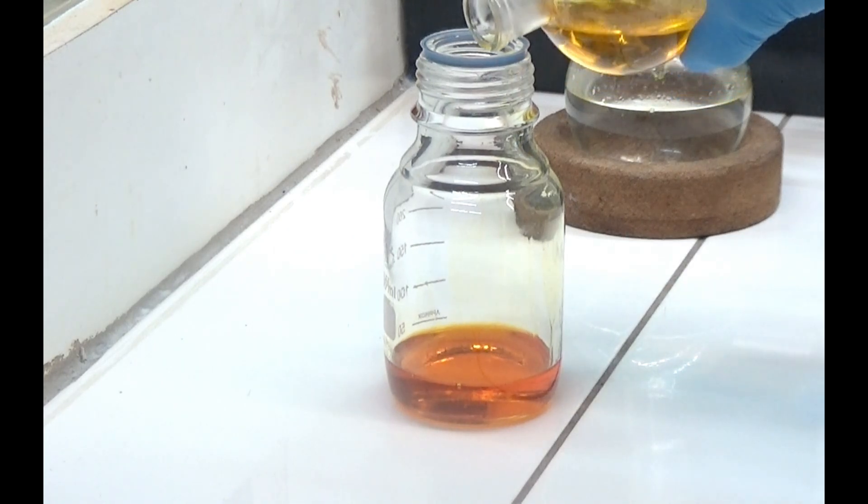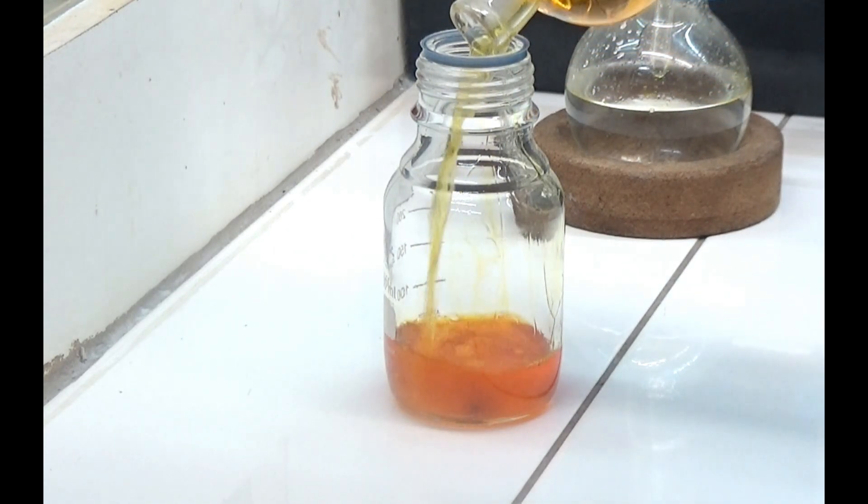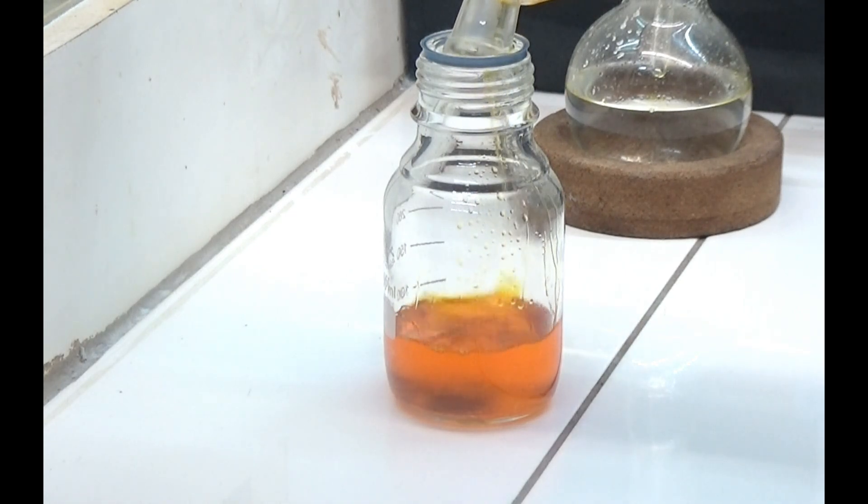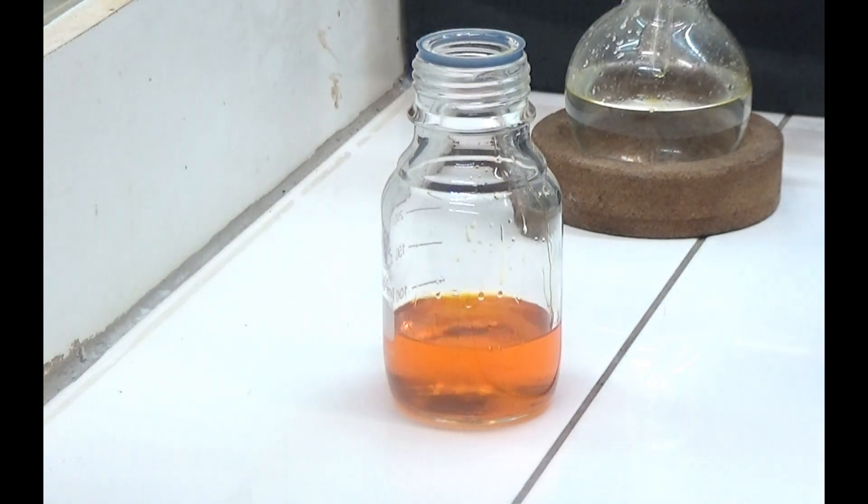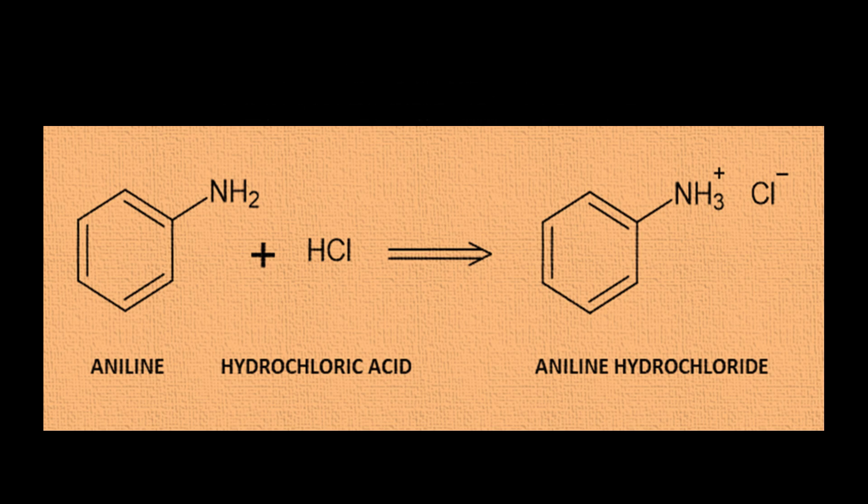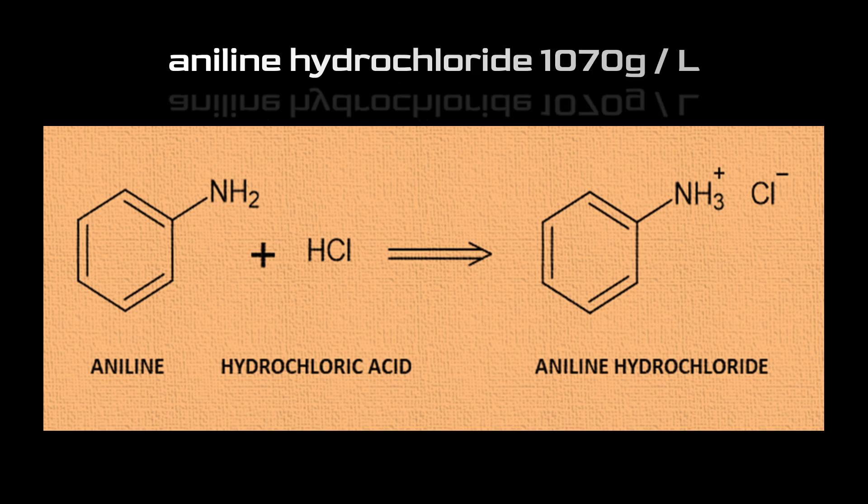Join the organic phases that contain aniline. To separate aniline from other secondary compounds, we will convert it into its hydrochloride with hydrochloric acid. Aniline has a solubility of 36 grams per liter. Aniline behaves like a base that upon contact with hydrochloric acid forms aniline hydrochloride, which has a solubility of 1070 grams per liter.